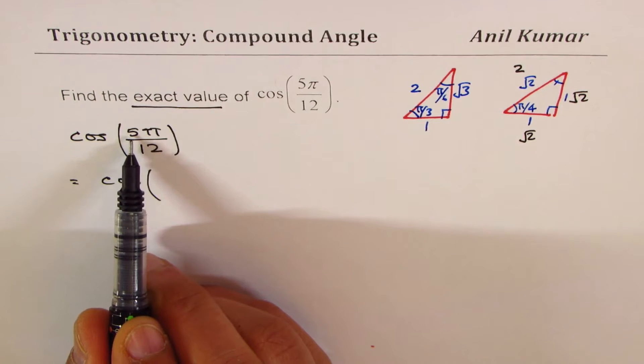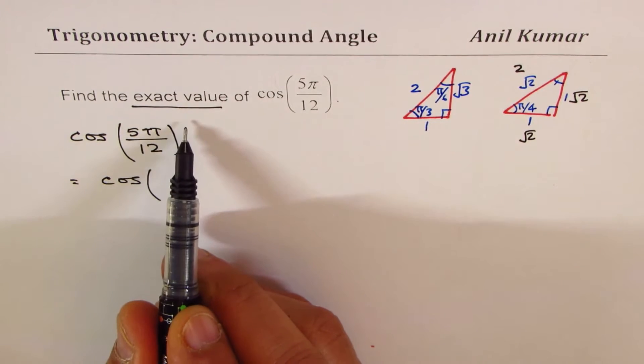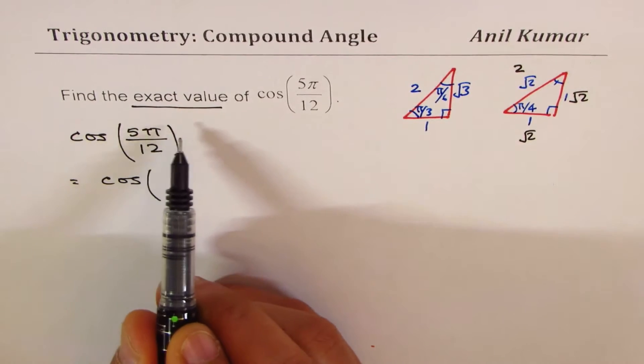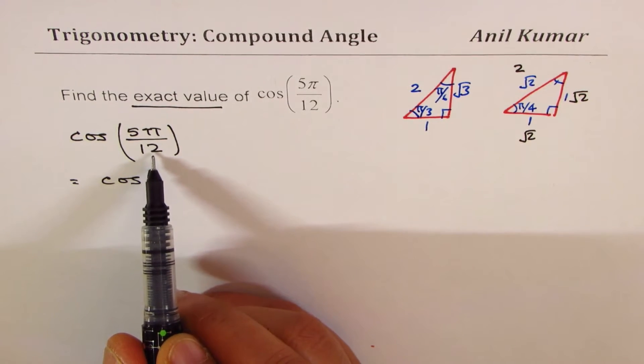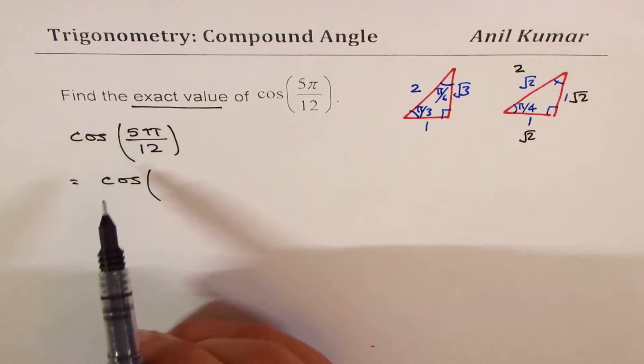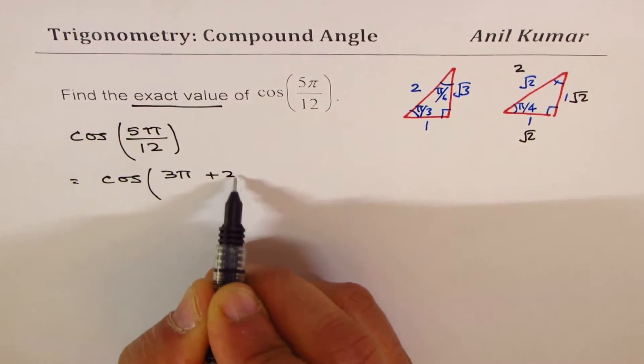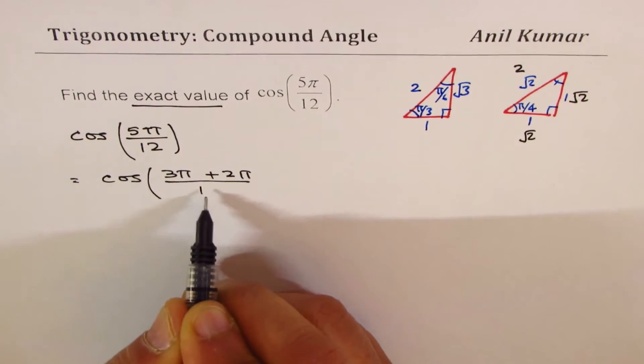5 could be written in two ways: 4 plus 1 or 3 plus 2. Now if I do 4 plus 1, 1 over 12 is still a problem. 3 plus 2 is a better option. So I'll write this as (3π + 2π) over 12.